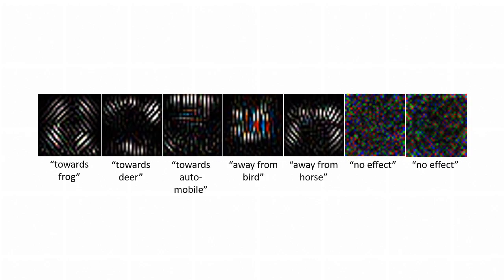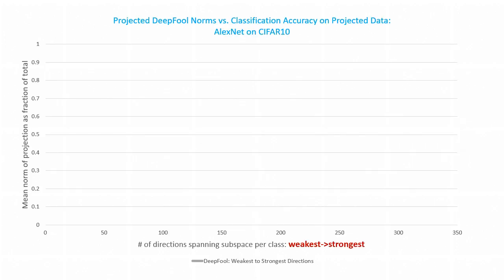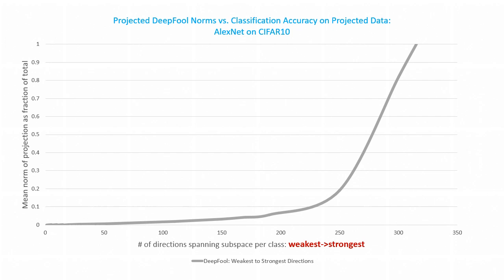This is just one example. We can identify a family of patterns that move predictions towards or away from any given class, or have no effect on class identity at all, and we can do it on whichever network. In fact, we can think of image space as being spanned by bases of patterns like this, and think of the basis vectors as ordered by the strength of their class association — for example, weakest to strongest on this x-axis. This curve gives the mean L2 norms of the DeepFool perturbations of this dataset as a function of the subspace onto which they're projected.